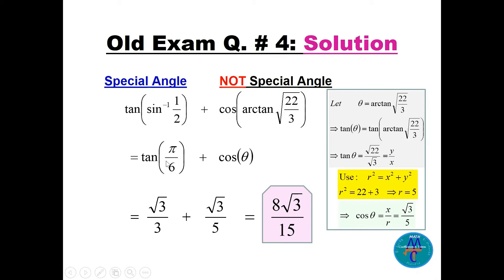The second part involves a non-special angle. Let θ = arctan(√22/3), so tan θ = √22/3, meaning y = √22 and x = 3. Then r = √(x² + y²) = √(9 + 22) = √31 = 5. Wait — r = 5, so cos θ = x/r = 3/5. Wait — cos θ = √3/5. Adding with LCD 15: multiply √3/3 by 5/5 and √3/5 by 3/3, giving 5√3/15 + 3√3/15 = 8√3/15.